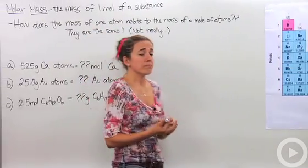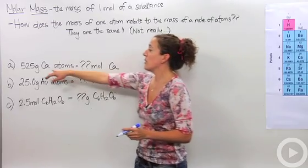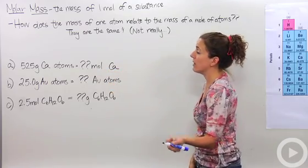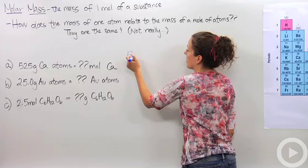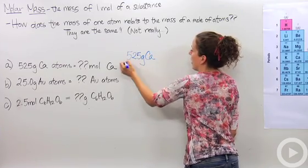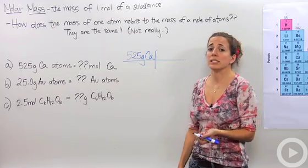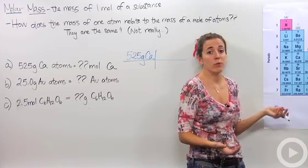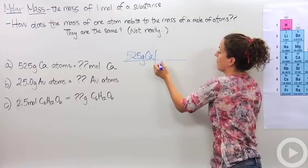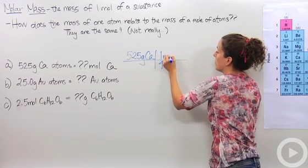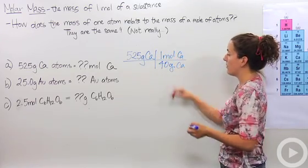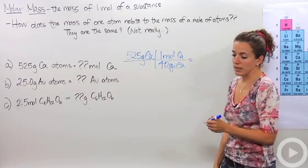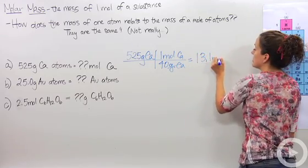Let's do some calculations and see how we can apply this. We have 525 grams of calcium atoms. How many moles of calcium atoms do we have? We start with our given: 525 grams of calcium. We find the molar mass from the periodic table — calcium is 40.078, so we'll round to 40 grams per mole. We put 40 grams in the denominator so we can cancel the unit. 525 divided by 40 gives us 13.1 moles of calcium.